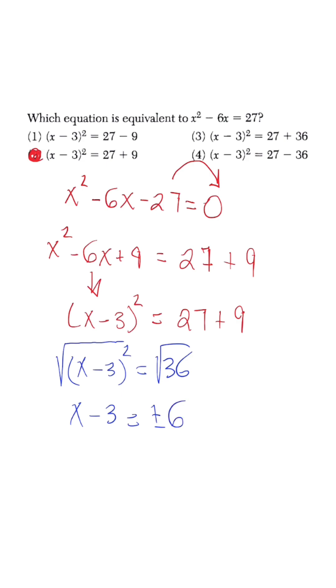So now we know x is equal to positive 3 plus or minus 6. That's the equation that'll give us our answers. So x is equal to 3 plus 6 meaning x is equal to 9 for our first answer choice, and x is equal to 3 minus 6 meaning x is equal to negative 3 for our second answer choice.